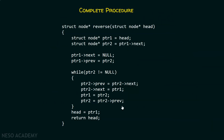This is the complete procedure. We have ptr1 and ptr2 declared. Initially, ptr1 is pointing to the first node and ptr2 is pointing to the second node. The code outside the while loop updates the links of the first node only. The code inside the while loop updates the links of all other nodes. Finally, we update the head so that it can point to the last node of the list, and then we return head.